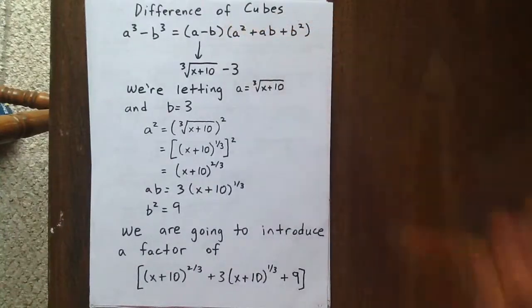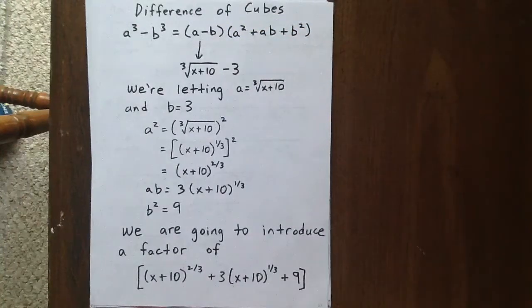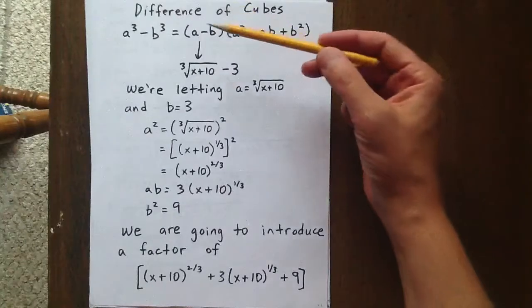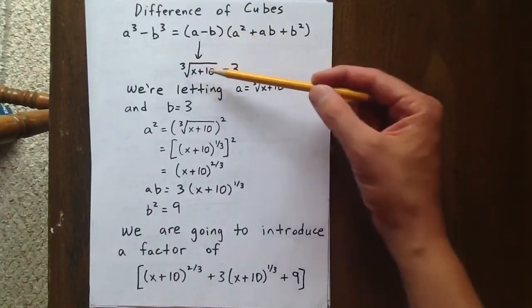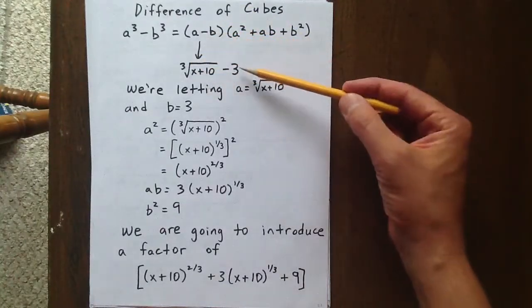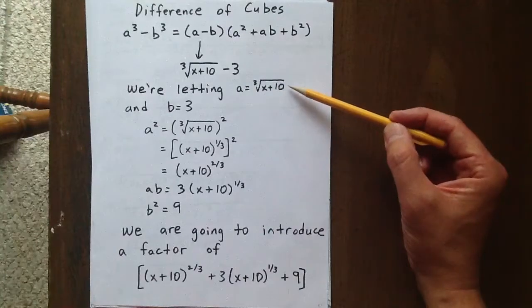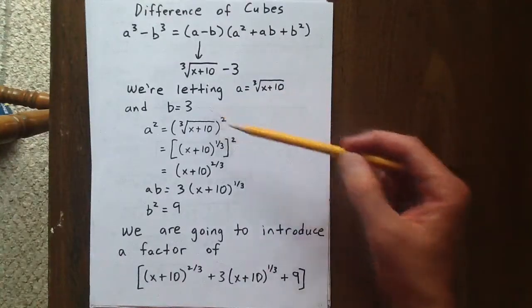We're going to think of a minus b as the cubed root of x plus 10 minus 3. So therefore, a is the cubed root of x plus 10 and b is 3.